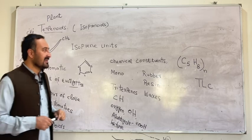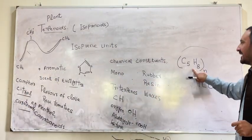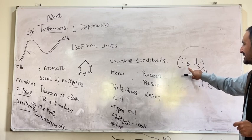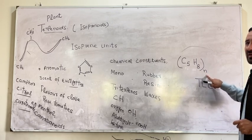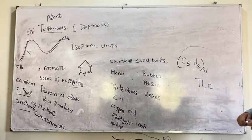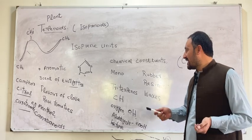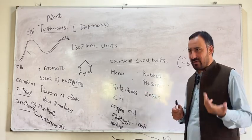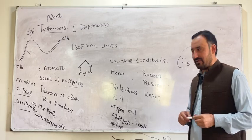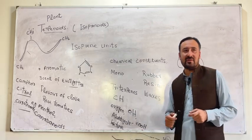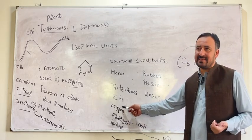This is the general formula of the terpenoids: C5H8 — this represents the number of carbon and hydrogen. The chemical constituents are composed of triterpenes, monoterpenes, diterpenes, and tetraterpenes. Normally, they are composed of carbon and hydrogen because they are organic in nature, along with oxygen.